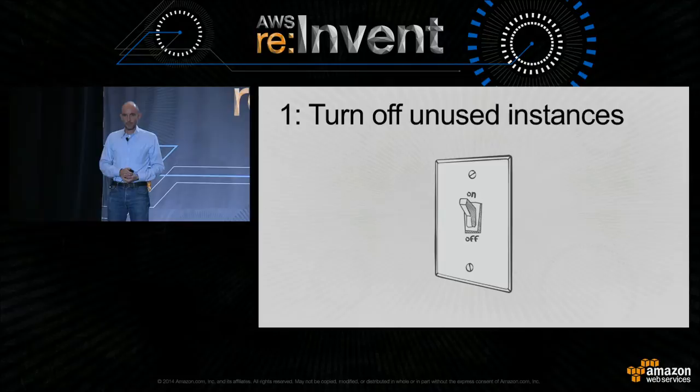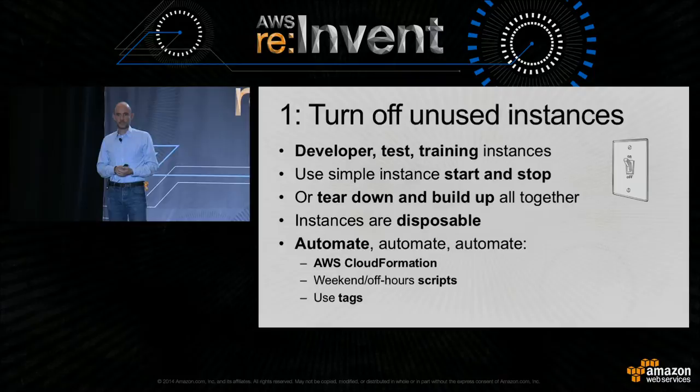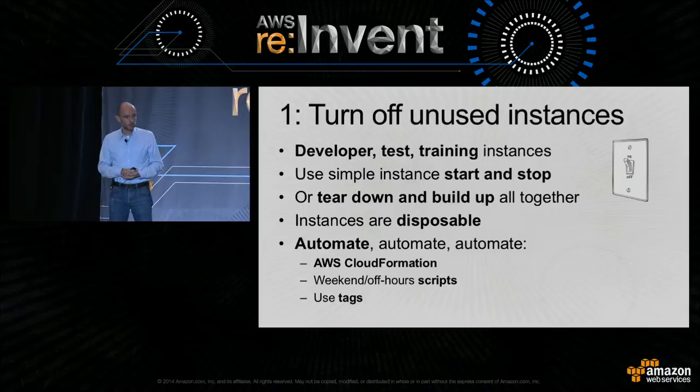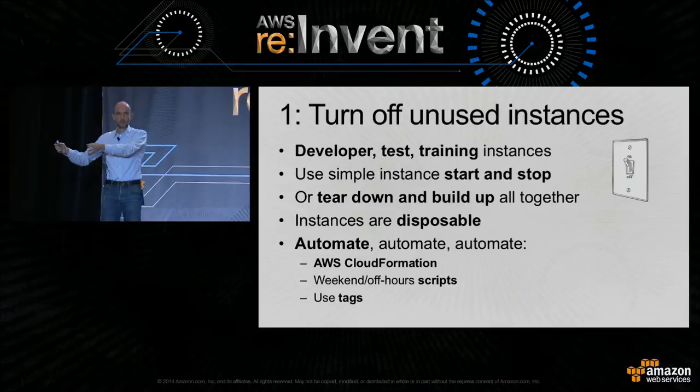You'll be amazed at how many instances are running doing nothing that you can save a lot of cost with. Developer instances, test instances, training instances — all of these can be switched off over the weekend or at night. You can use EC2's simple start-stop feature to turn off instances and back on again without losing data on EBS volumes, or build whole architectures using automation and tear them down altogether when not in use.